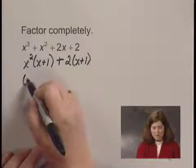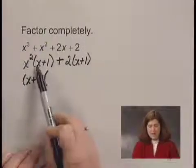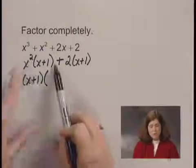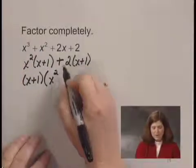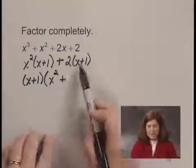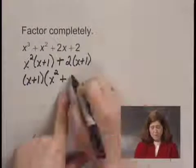We write this as x plus 1 times, and now x plus 1 times x squared was the first part. So I write x squared plus x plus 1 times 2. I'm factoring out an x plus 1 there, so I'm left with a 2.